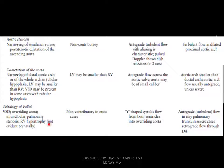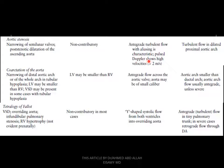Let's talk about pulmonary lesions and aortic stenosis. Aortic stenosis involves narrowing of the semilunar valves with post-stenotic dilatation of the ascending aorta. In the four-chamber view, it is non-contributory. In the five-chamber view, antegrade turbulent flow with aliasing is characteristic. Pulsed Doppler shows high velocities more than 2 m/s. Three-vessel view shows turbulent flow in the related proximal aortic arch.